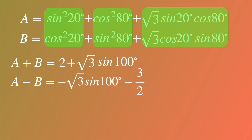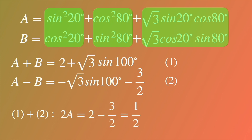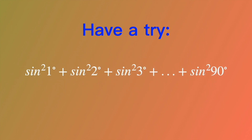Now we have the two equations that we need. What we want to know is the value of the original trig expression, which equals A. In order to get A, add the two equations. Then we will have 2A equals 2 minus 3 over 2 equals 1 half, which means A equals 1 half — that's the result of the original expression. This method is very interesting; the dual form is just like another side of the coin. Maybe you want to have a try using the dual form — please leave a comment to let me know.